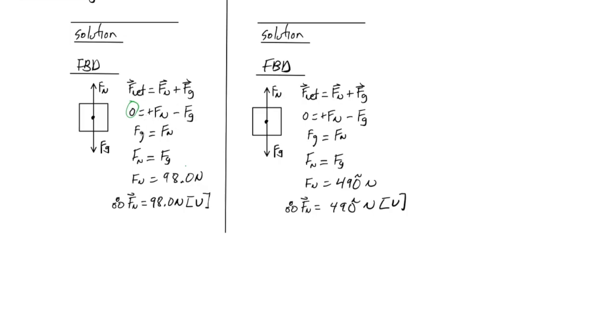So when we bring the force of gravity to the other side, we have the weight or the force of gravity is equal to the normal force, which in this case equals 98 newtons, but 98 newtons up. The same can be applied for part B. The exact same mathematics are involved, same algebra, but the normal force is 490 newtons up.